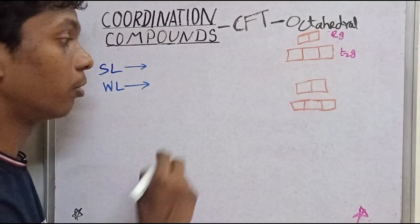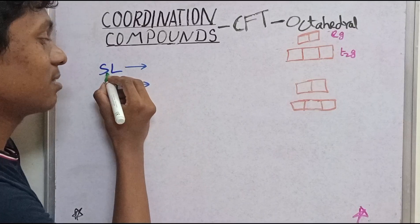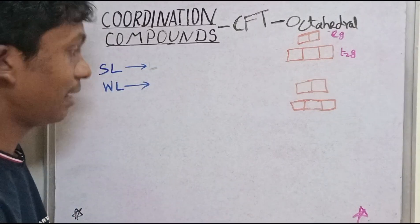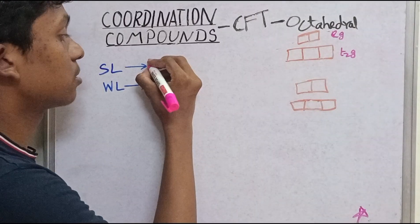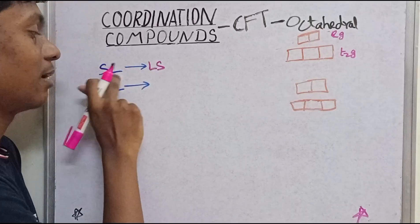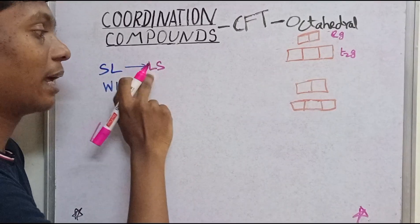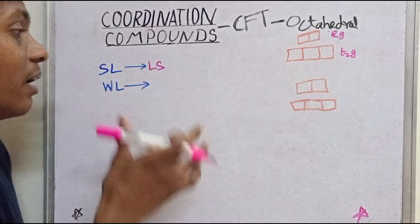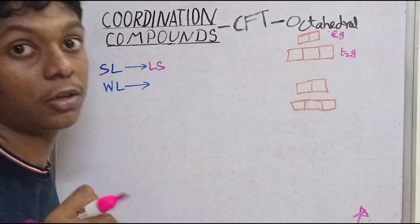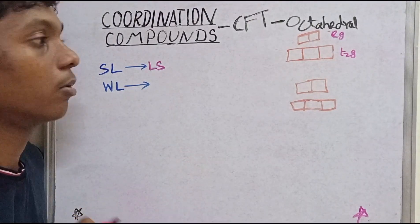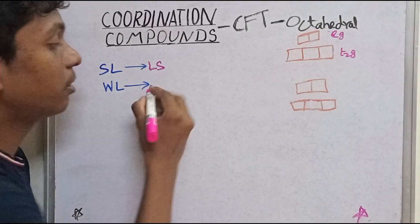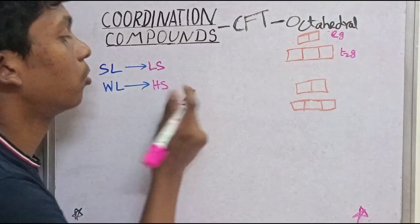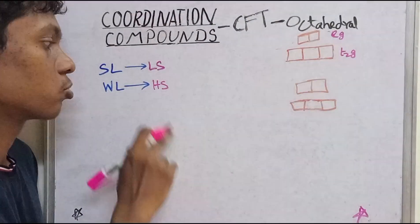The trick is SL-LS: SL stands for strong ligand, LS stands for low spin complex. So strong ligand equals low spin complex. And weak ligand equals high spin complex.